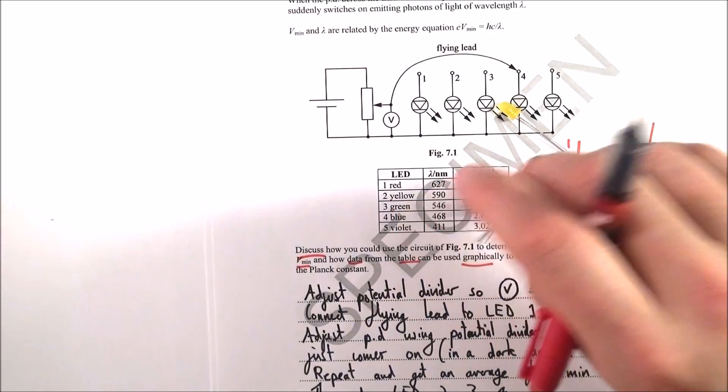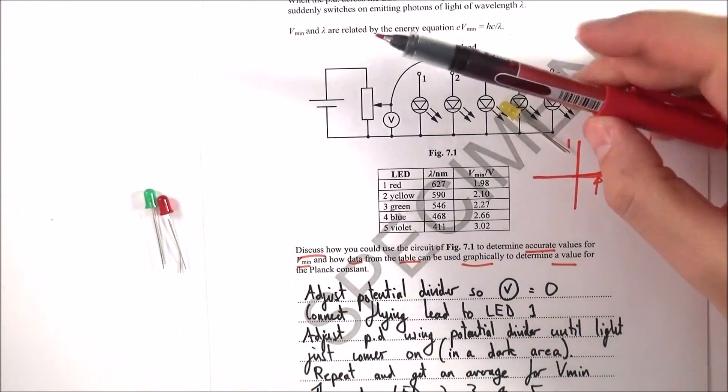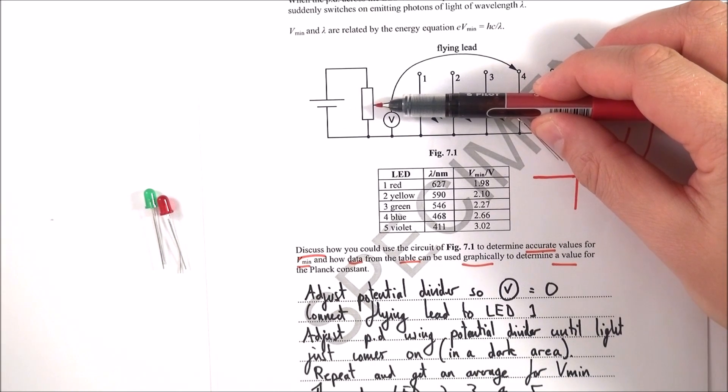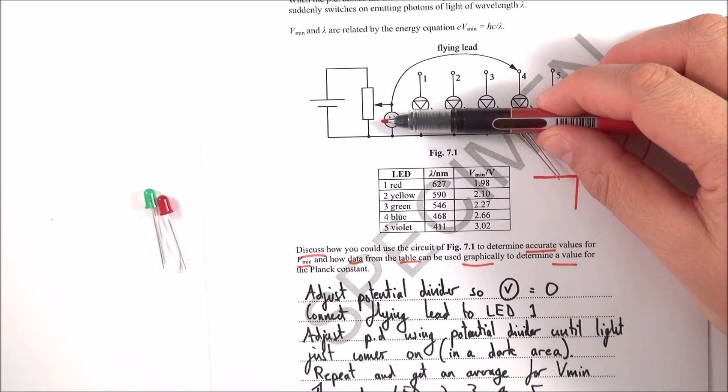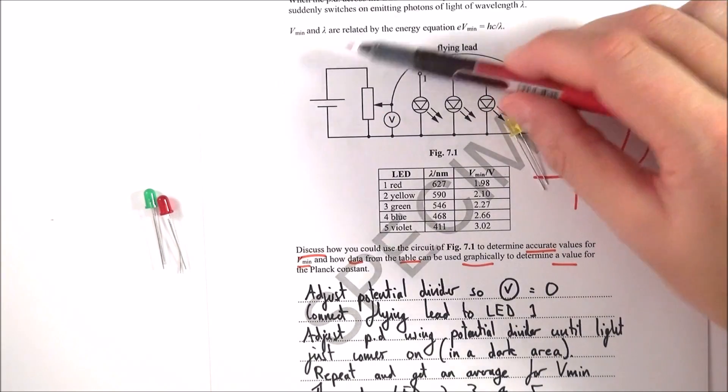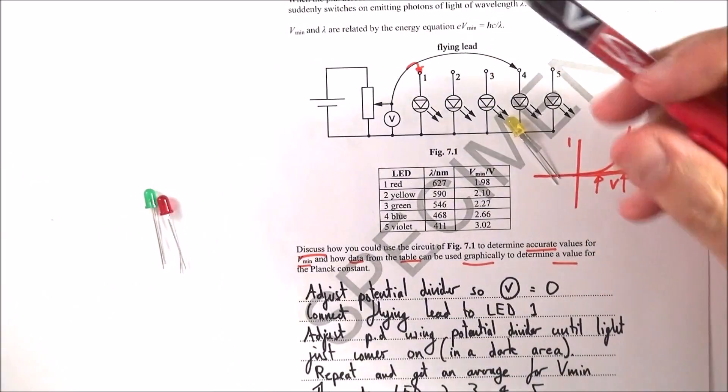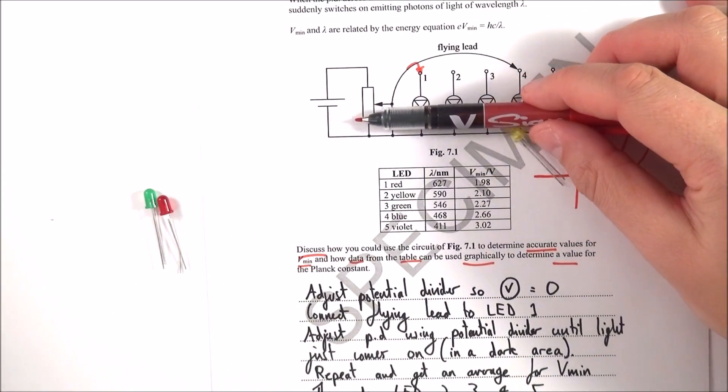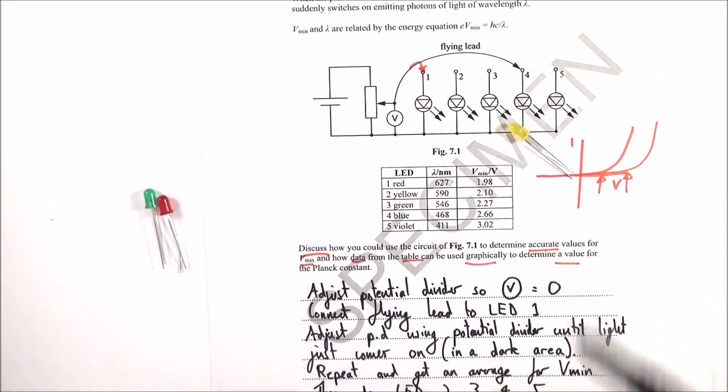I've basically put it in bullet points and spelled it out. You adjust the potential divider down to zero. That's my first thing. You then connect the flying lead to LED number one.